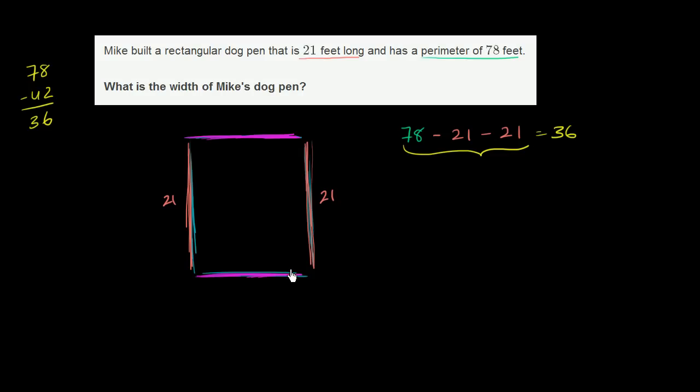So what are two distances, or what are two numbers that I can add together to get to 36? Well, we know that 18 plus 18 is equal to 36. So this one down here must be 18, and this one up here must also be 18.